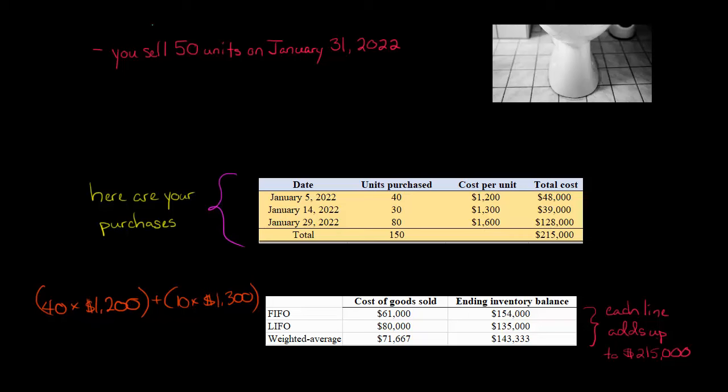So the ending inventory would be the total cost, our total cost minus that cost of goods sold. So $215,000 minus $61,000 is $154,000. So that would be the ending inventory balance. After we've sold these units on January 31st, if you made a balance sheet, it would say inventory balance of $154,000.